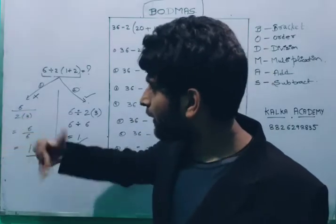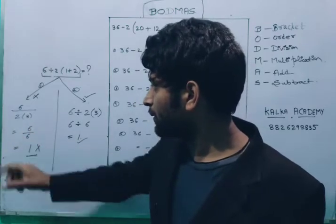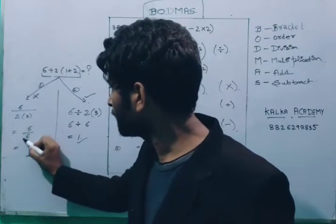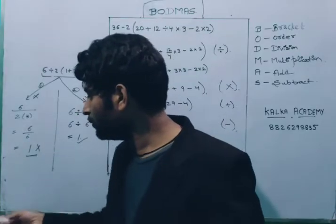This means 6 by 2 into 3, 6 by 2 into 3. 6 will cancel out and then 1 will cancel out. But this is not true.